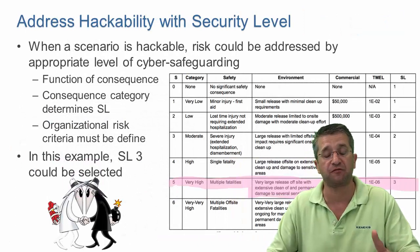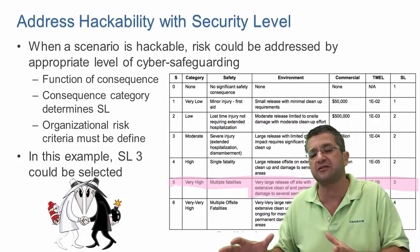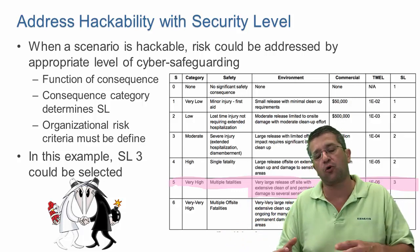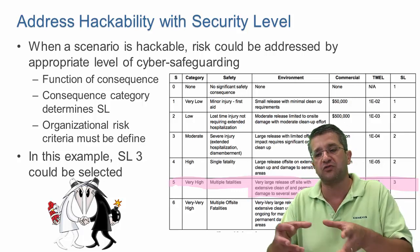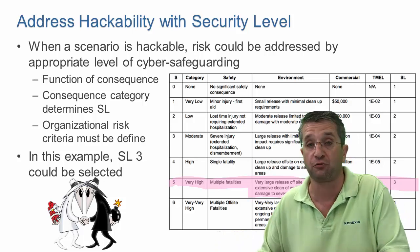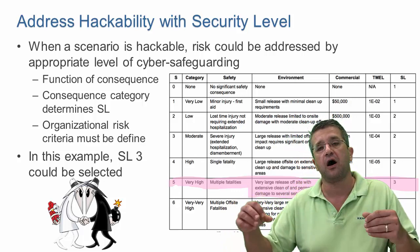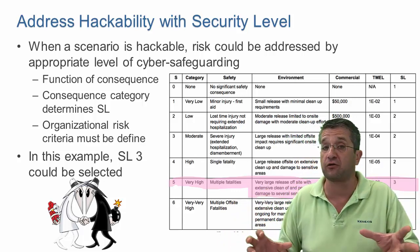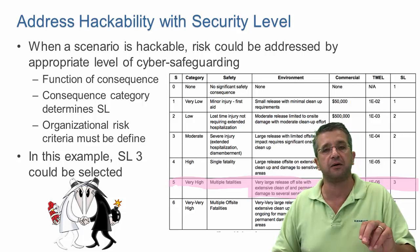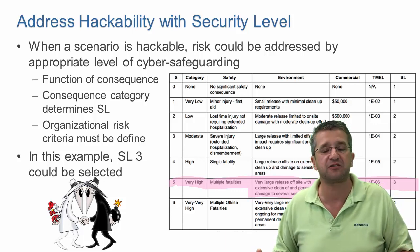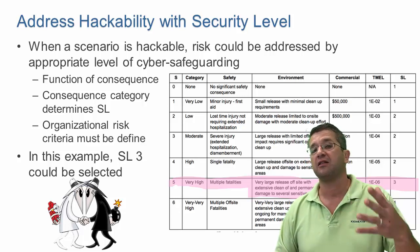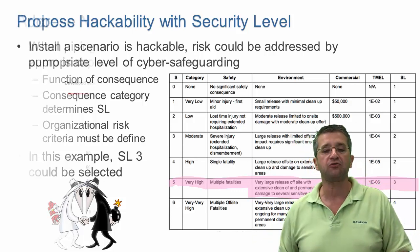We can do two things. First, we can look at the scenario and say the consequence is bad and it's hackable, so we need to assign an appropriate security level. A very high consequence could result in a security level of 3 under IEC 62443, which is a very high requirement for cyber hygiene and safeguarding — difficult to achieve and requires a lot of work. But from the process engineering and functional safety perspective, let's also look at preventing this without using cybersecurity.